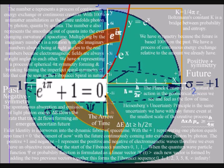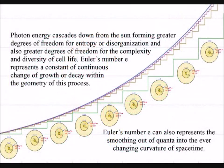Within such a reference frame, the number E represents a constant of continuous change of either growth or decay. Also, the number E represents the smoothing out of quanta into the ever-changing curvature of space-time.